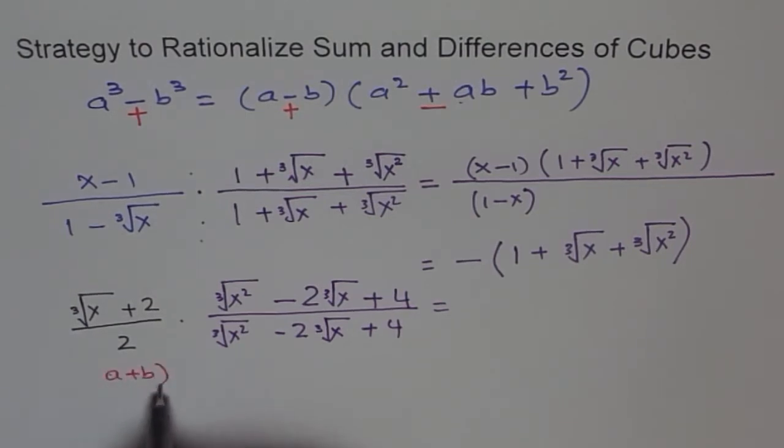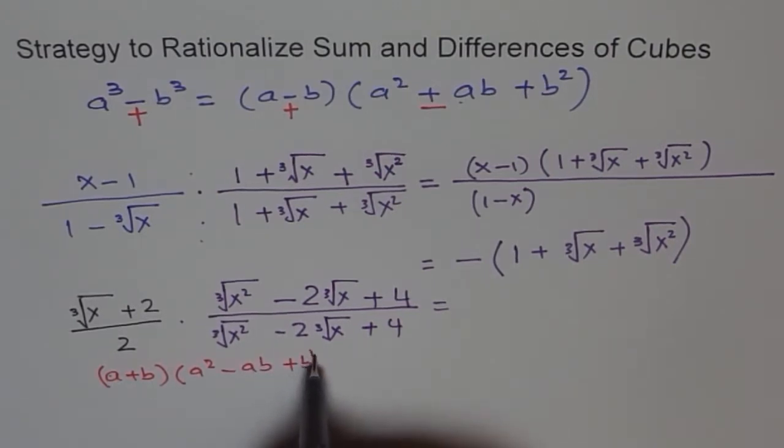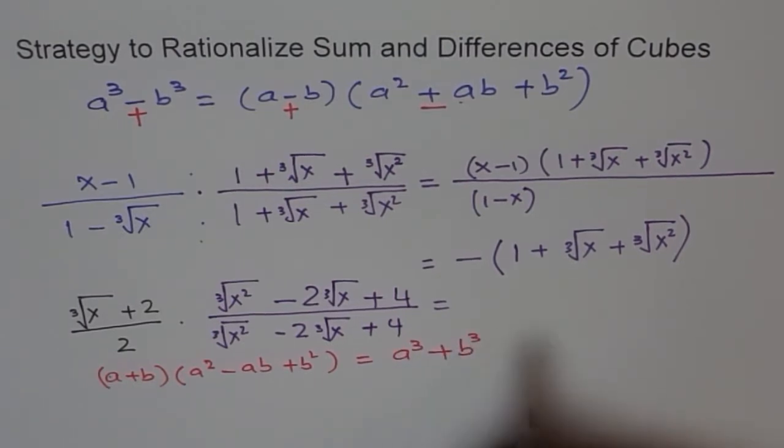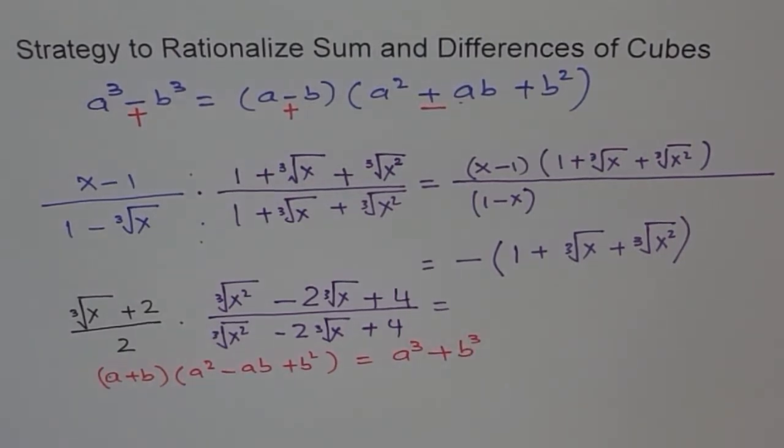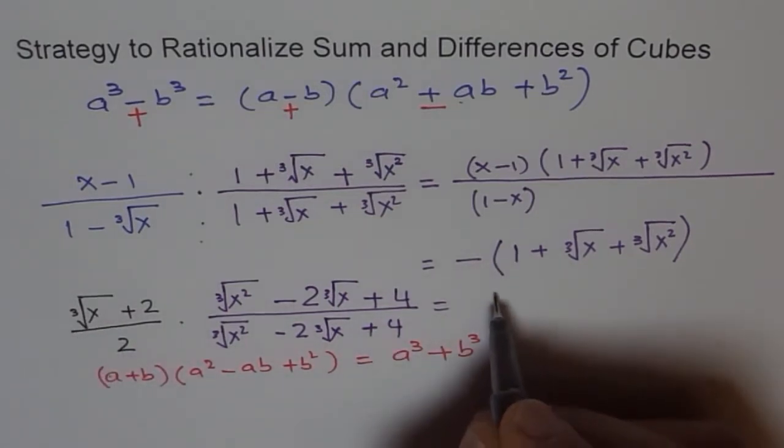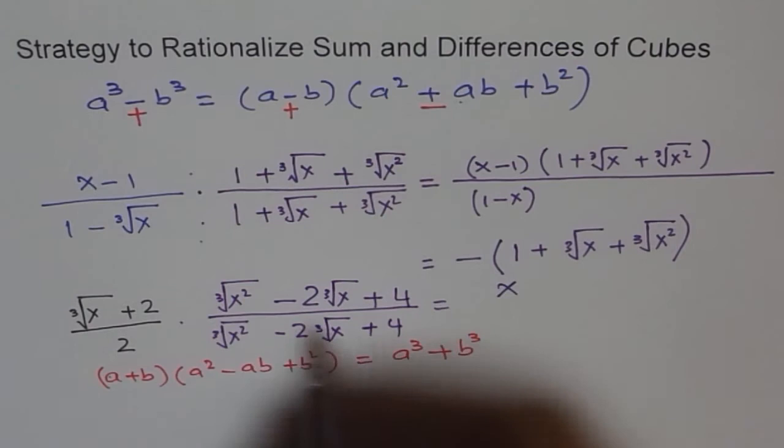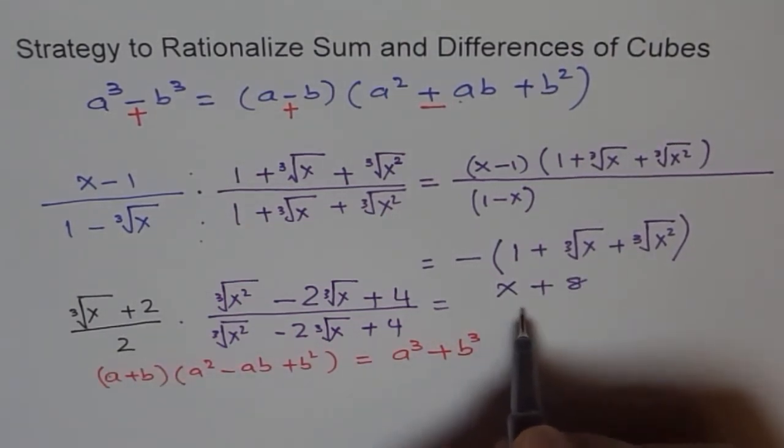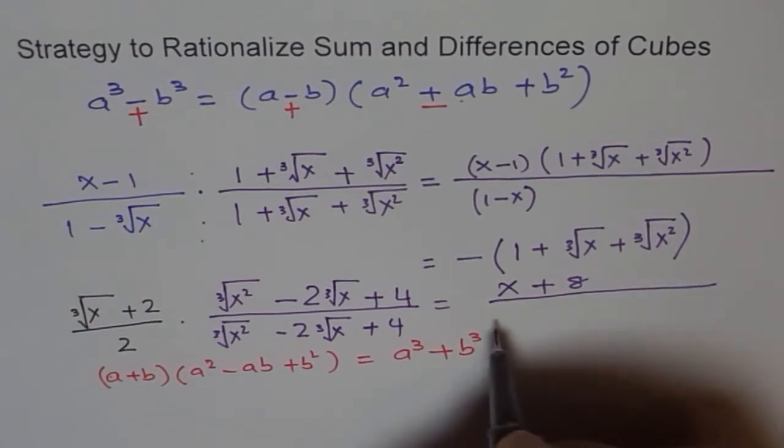So we get a³ + b³. Which is cube of this will be the number x and cube of this will be 8. 2³ is 8. So we get (x + 8) over 2 times all this. Do you see that?